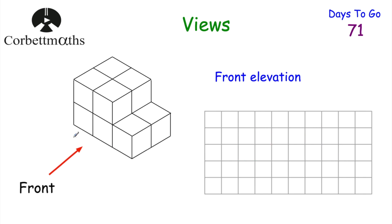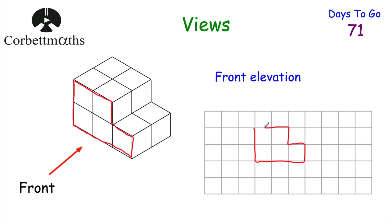Finally, draw the front elevation of this three-dimensional shape. Looking at it from the front, you'd have two squares down, the base going across, up one, in one, up one, then join up. That would be the front elevation — an L-shaped or step profile. We've now looked at the plan view, the side elevations, and the front elevation.